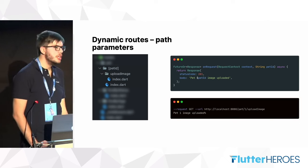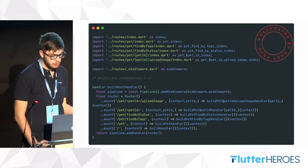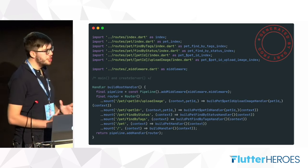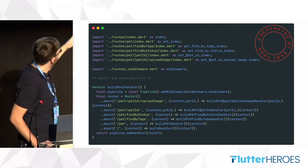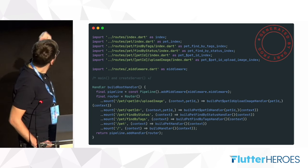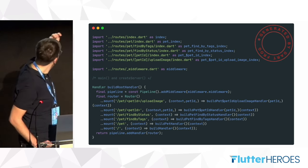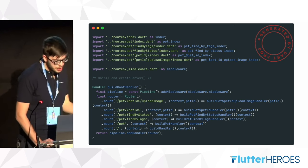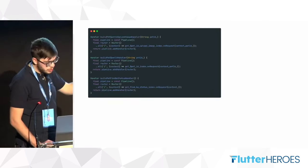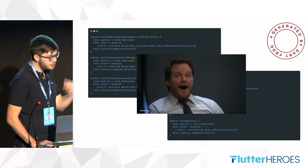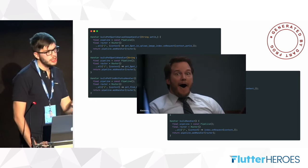What about the server file now that we've added more complexity? If we look again, the server file has changed significantly. The main and createServer methods remain the same. The buildRootHandler method has registered many more routes — all the routes we defined. For the dynamic path ID route, you can see the handler takes the path ID as input. And again, it's all generated by Dart Frog when you use the dart frog dev command.